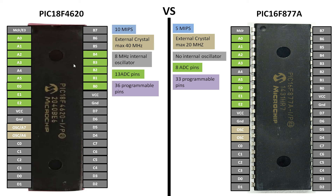Why does PIC18 have 36 pins and PIC16 have 33? In the PIC18, when you are using the internal oscillator, pin A6 and pins 13 and 14 can be turned into digital input/output pins using MikroC for PIC. You can program them as digital I/O pins if you use the internal oscillator instead of the external oscillator. On the PIC16F877A, you do not have an internal oscillator, so you cannot use those pins as digital I/O — a crystal must be connected to those pins for the PIC to work.